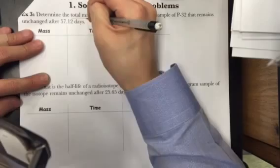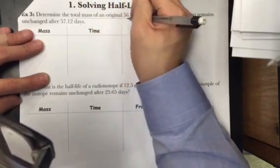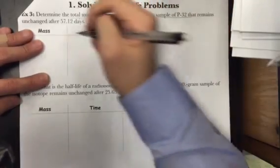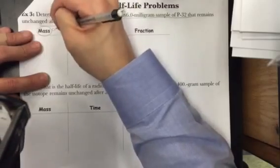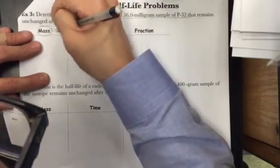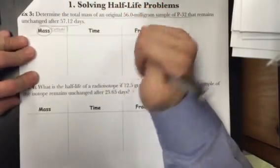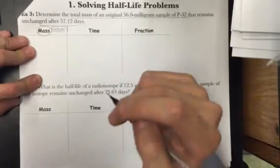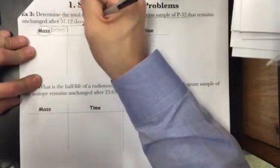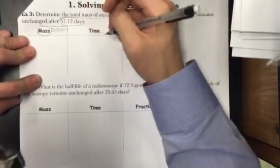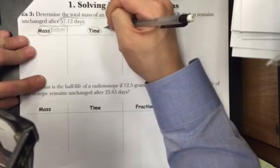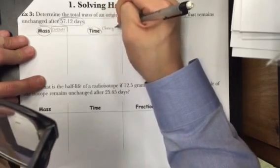What we're trying to find is the total mass that remains. So the mass column must carry our answer because our answer will be in units of mass. What changes here would be time because you have to get to 57.12 days to get to the answer. So therefore our time column in step 1 would be our change.